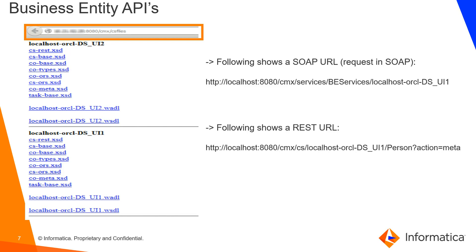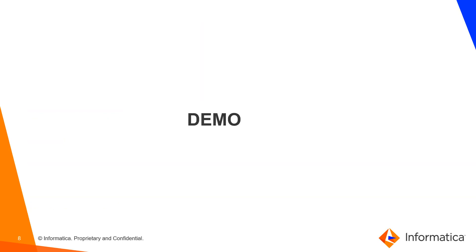For the Business Entity API, you run a request with host name, port, followed by CMX/CS/files. This returns all the ORS instances configured in the hub console, each with either a WADL or WSDL file, along with a schema definition. This file can be given to downstream systems to validate or parse responses. We're going to focus on the WADL file, which is for REST calls, and I'll show how to import it in SOAP UI to fire GET, PUT, or POST requests.